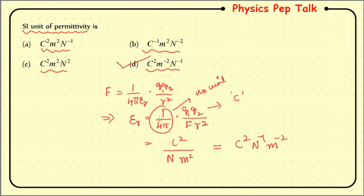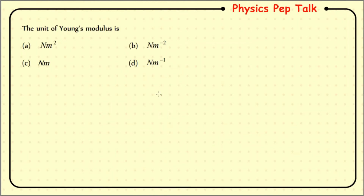Next question: the unit of Young's modulus. We know that Young's modulus, rigidity modulus, and bulk modulus all have the unit of pressure. Therefore newton per meter square is the correct answer.